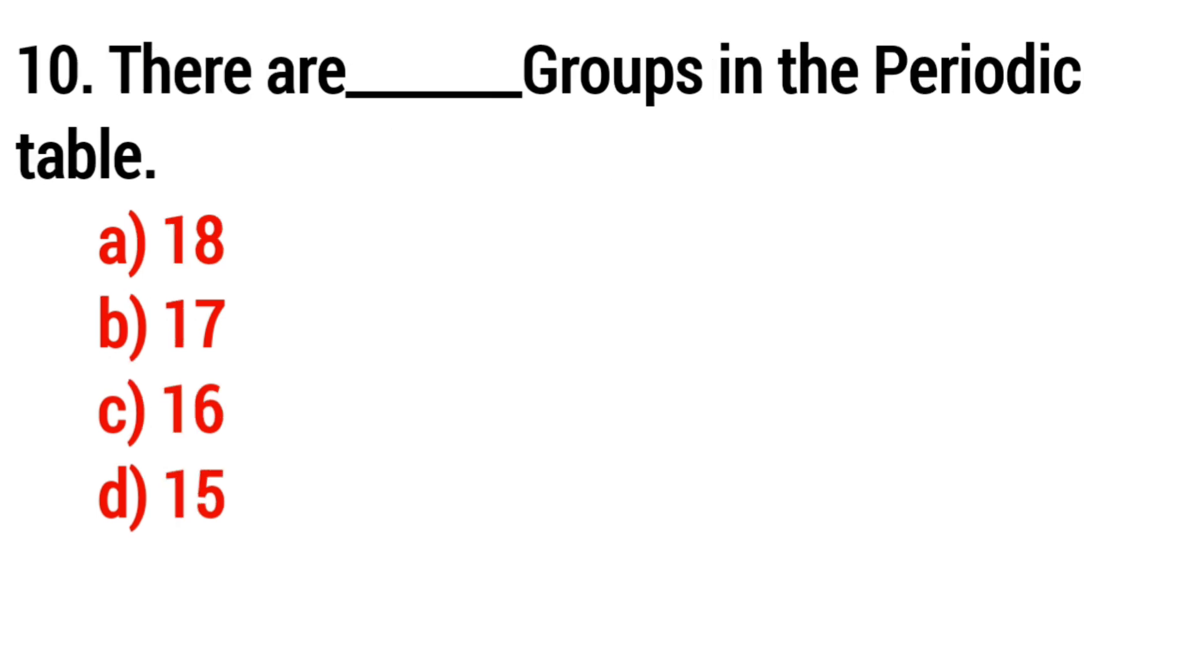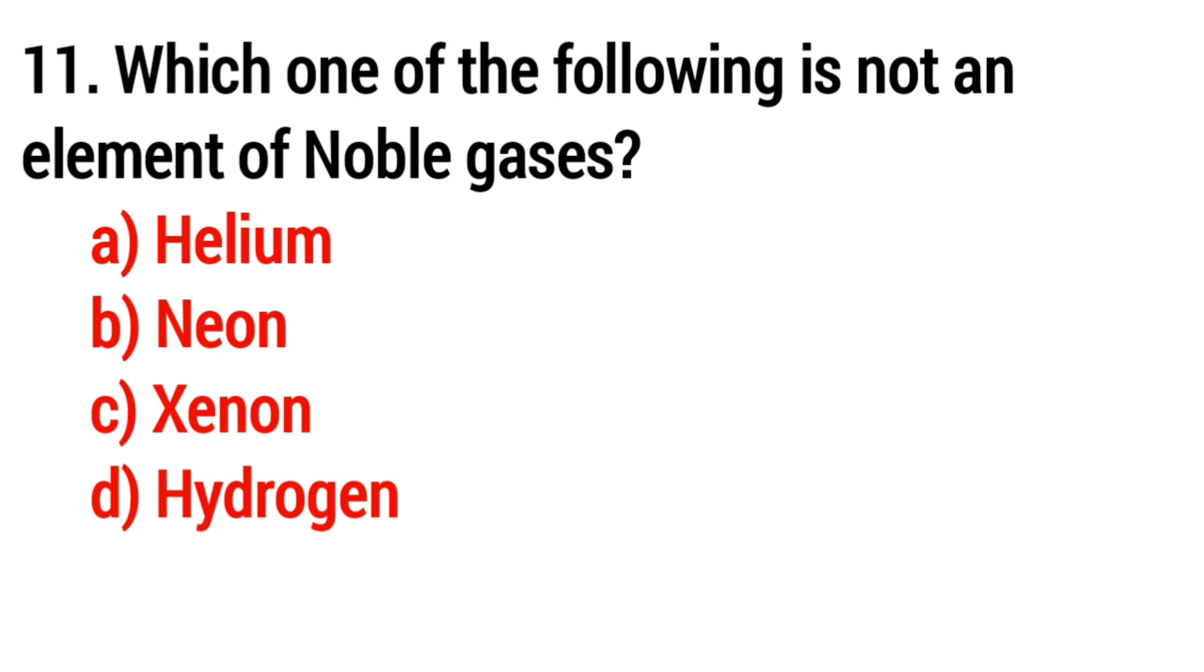Question number 10: There are blank groups in periodic table. Question number 11: Which one of the following is not an element of noble gases? Answer: option D, hydrogen.